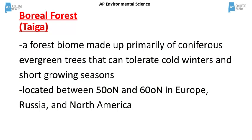The taiga is a forest biome made up mainly of coniferous evergreen trees. These trees tolerate cold winters and short growing seasons. The taiga is located generally between 50 degrees north and 60 degrees north latitude in Europe, Russia, and North America.